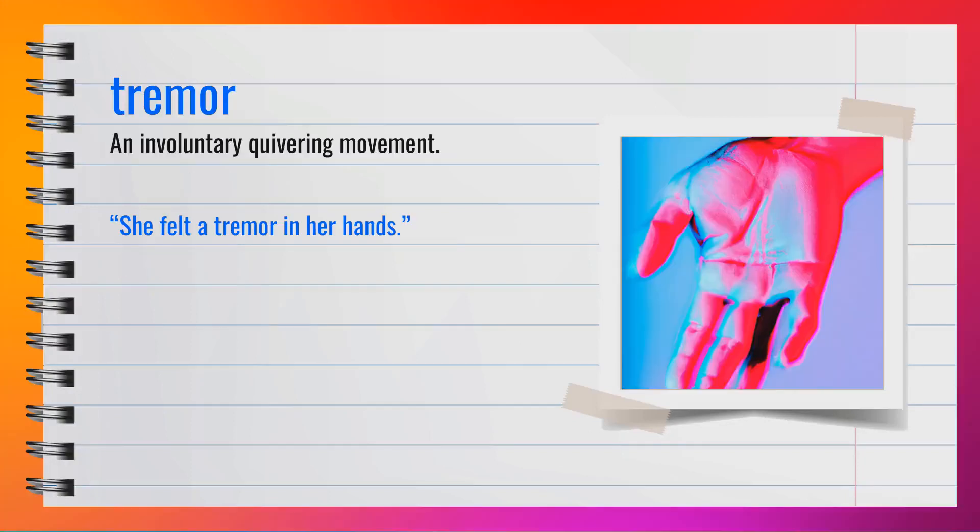The word tremor, spelled T-R-E-M-O-R, is a noun. Synonyms include shake and shiver. For example, she felt a tremor in her hands. A tremor is an involuntary quivering movement.